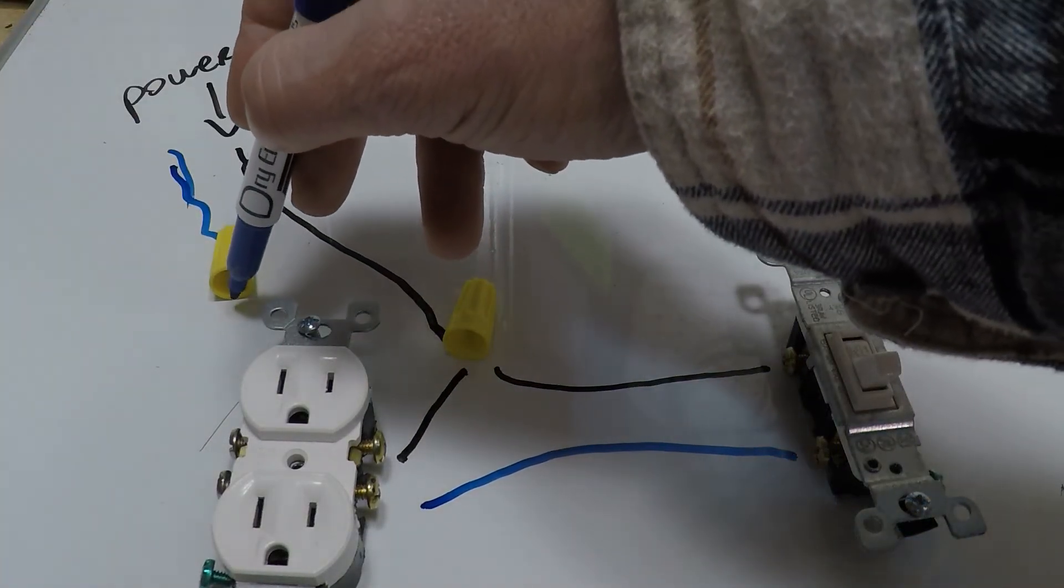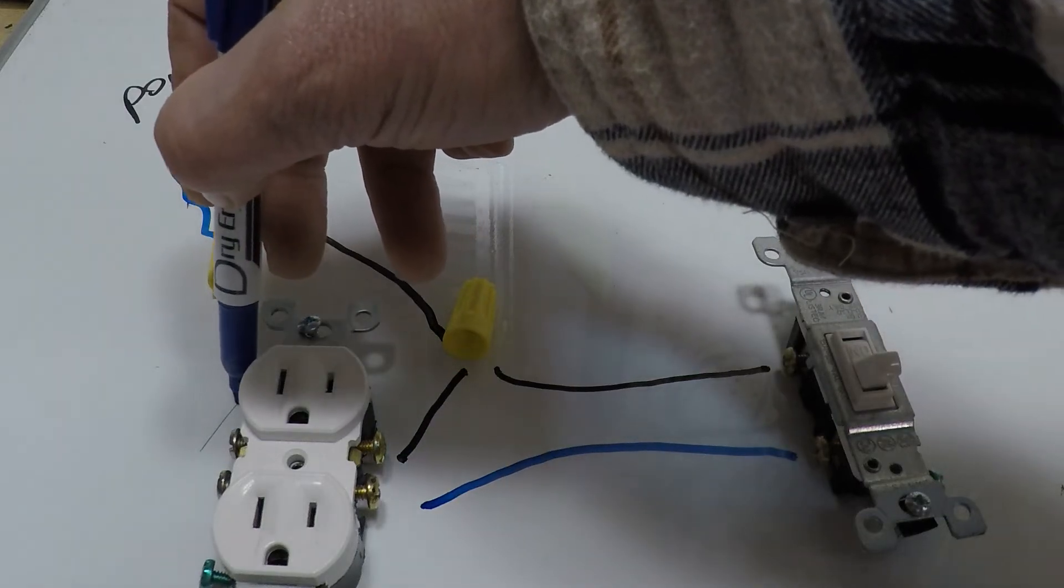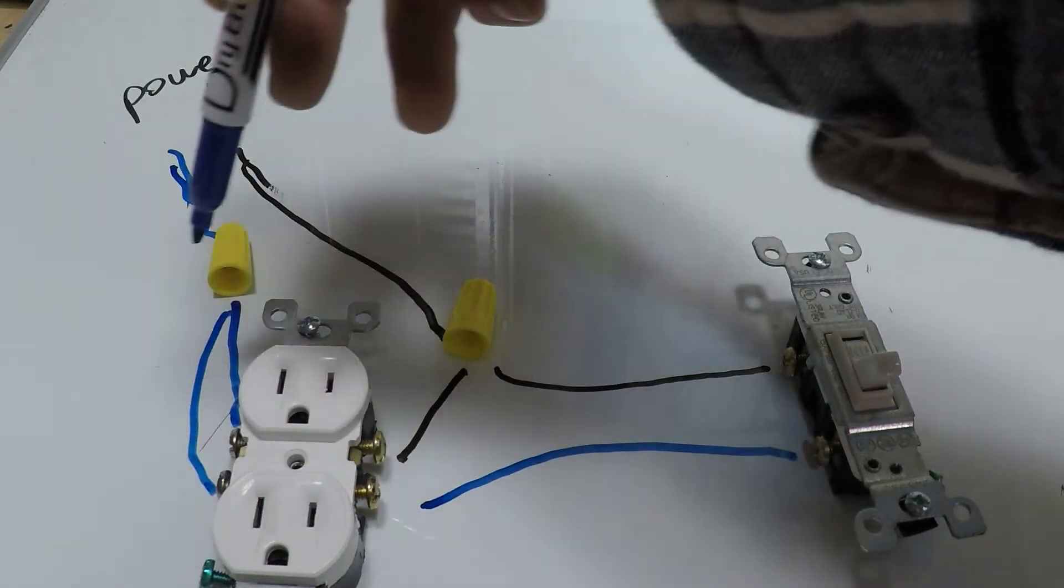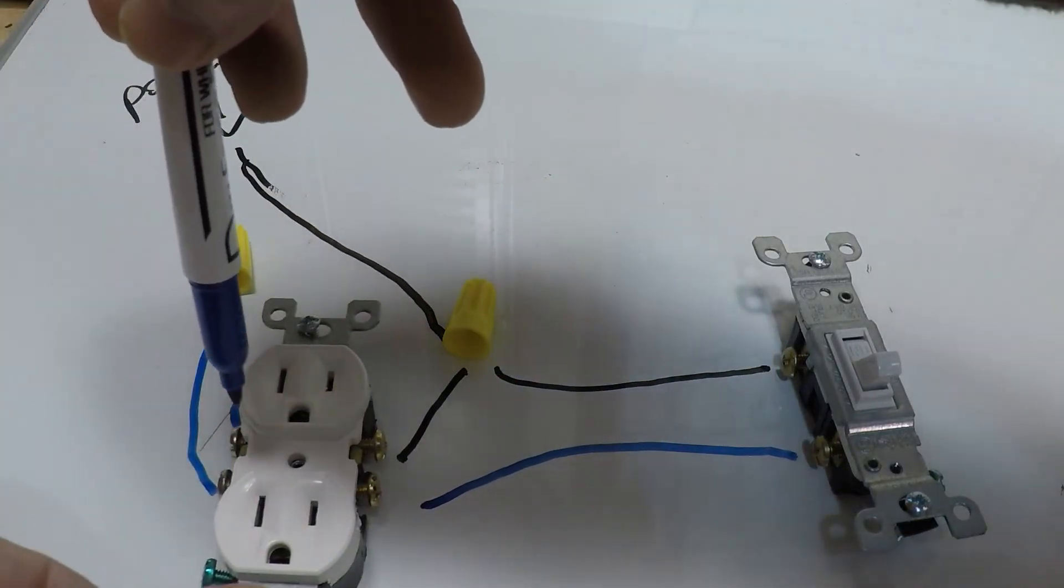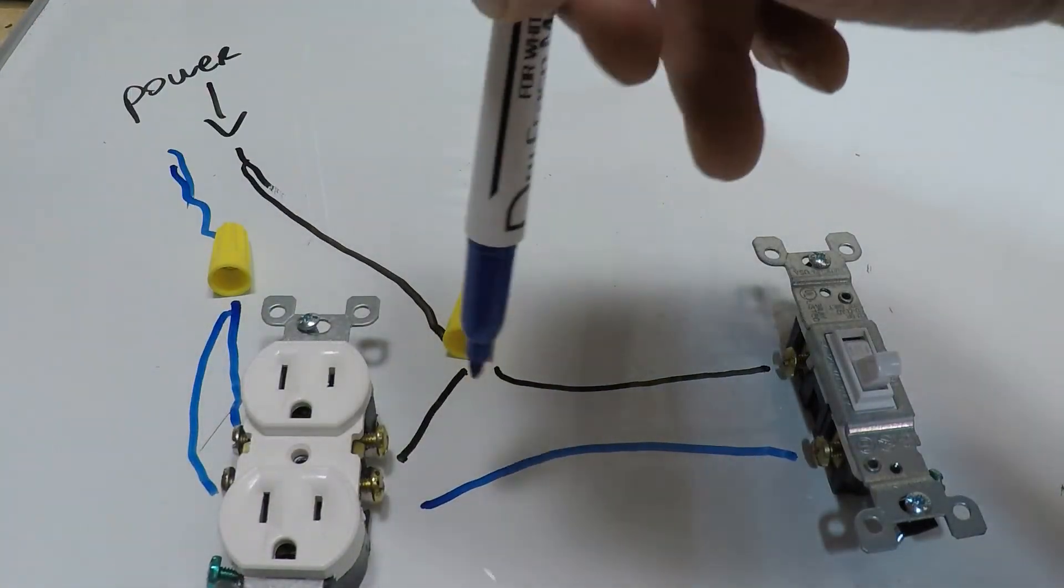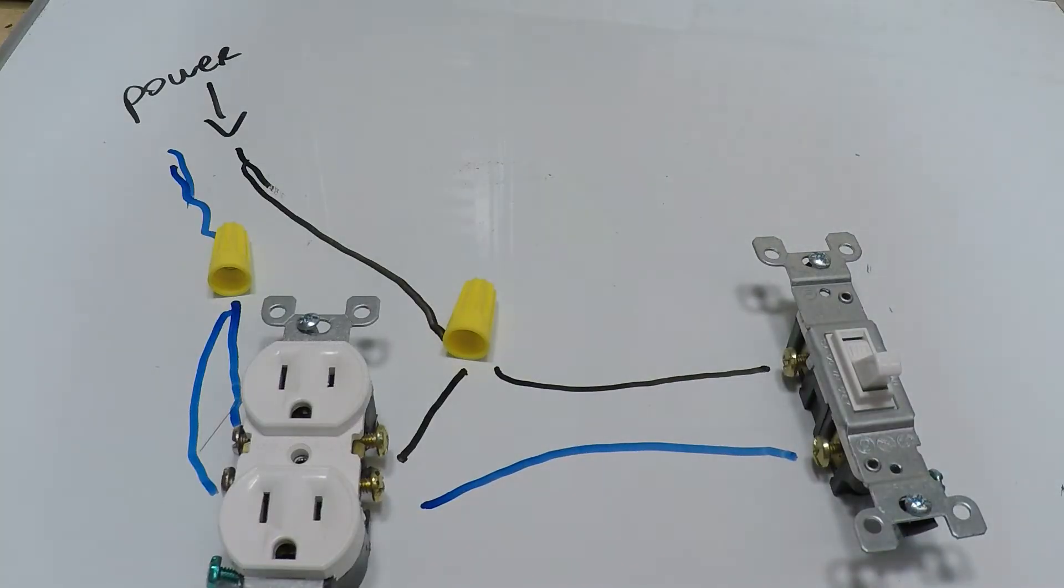From here you can go down to this one and down to this one here like this, or you could leave the piece of metal on here and let them bridge the gap.